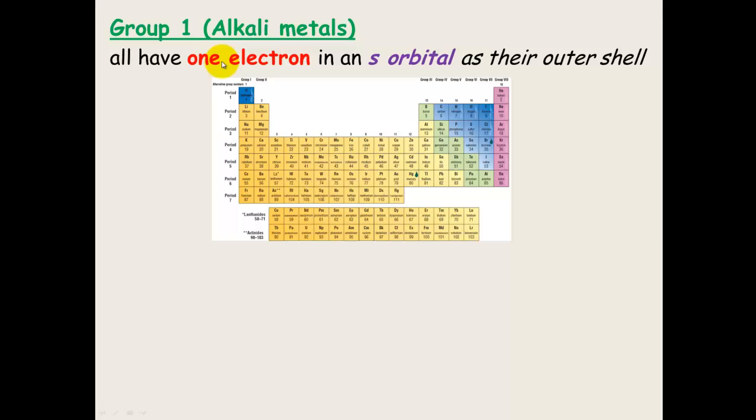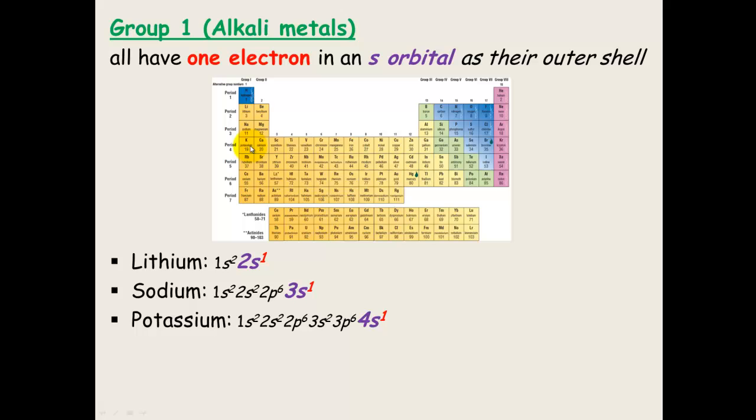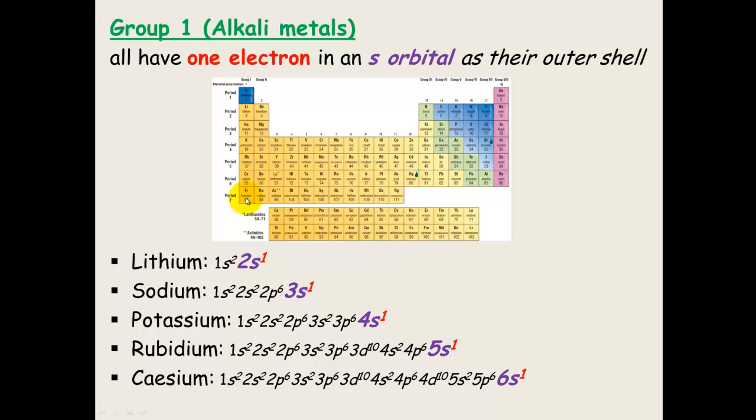Group 1 alkali metals all have one electron in an S orbital. So, group 1 alkali here. Lithium has 2S1. Sodium is 3 because it is in period 3 and it is S1 shells getting filled up. Potassium is 4S1. Period 4 still S1. Rubidium is 5S1. Cesium is 6S1. And Francium is 7S1.